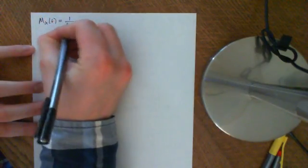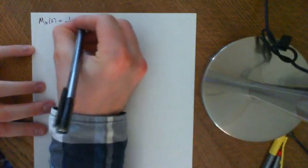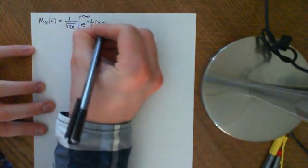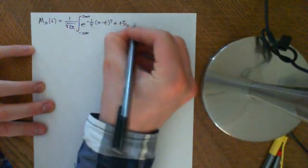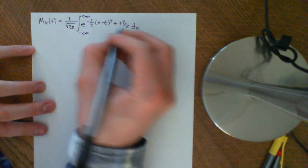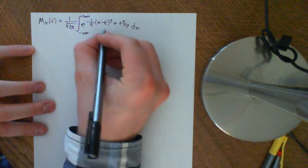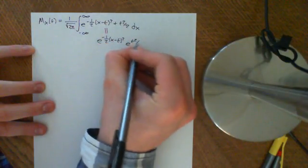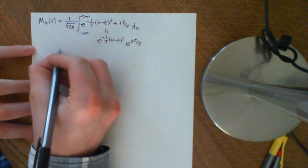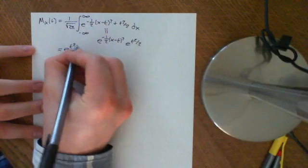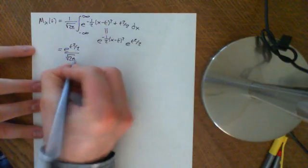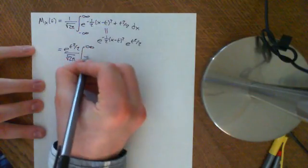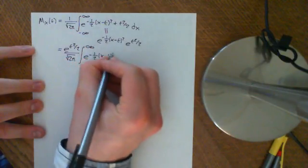So the moment generating function M_X(t) equals 1 over the square root of 2π times the integral from negative infinity to infinity of e to the power negative one-half (x minus t) squared plus t squared over 2 dx. We split the exponential into e to the negative one-half (x minus t) squared times e to the t squared over 2, and pull the e to the t squared over 2 to the front, giving e to the t squared over 2 divided by the square root of 2π times the integral from negative infinity to infinity of e to the negative one-half (x minus t) squared dx.